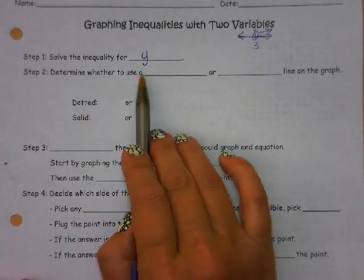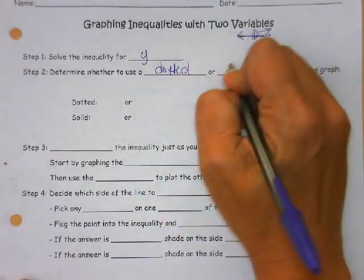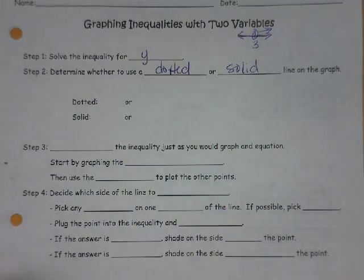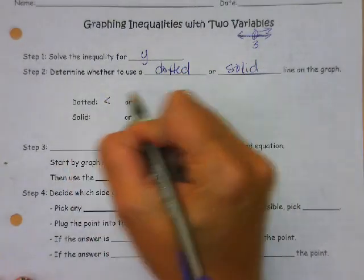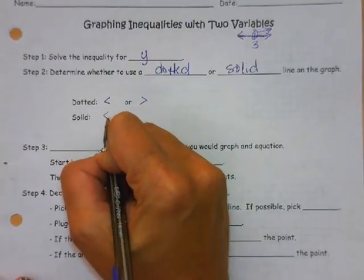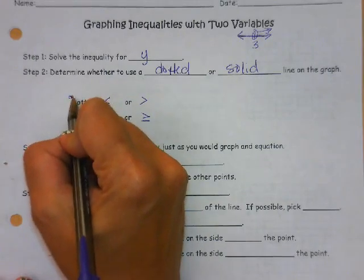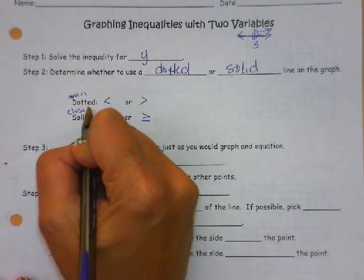We are going to determine whether to use a dotted or a solid line on the graph. Dotted and solid are very similar to open and closed circles. Dotted is going to be less than or greater than. Solid is less than or equal to, greater than or equal to. Dotted is kind of like our open circle, and solid is like our closed circle.